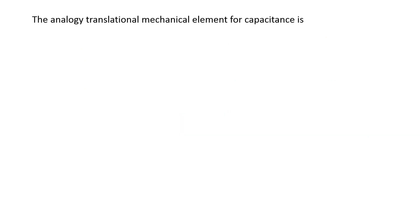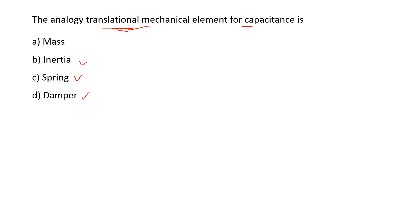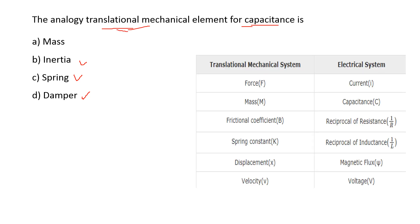Next: the analogous translational mechanical element for capacitance is — options are: mass, inertia, spring, damper. They are asking for the translational mechanical element for the electrical quantity of capacitance. From the analogy table between translational mechanical system and electrical system, capacitance corresponds to mass. So option A is the right answer. You must remember the analogy between mechanical and electrical systems.